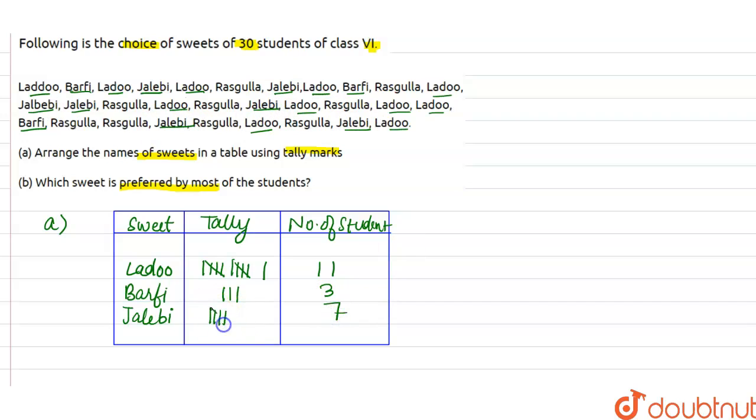Last sweet is Rasgulla. So we can say how many students like Rasgulla? One, two, three, four, five, six, seven, eight, nine. So nine students like Rasgulla. So frequency will be one, two, three, four, five, six, seven, eight, nine.